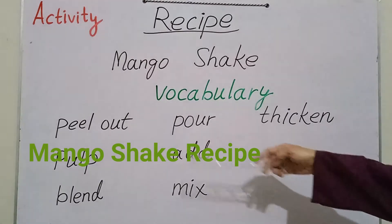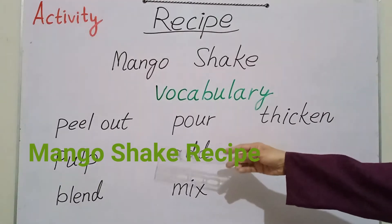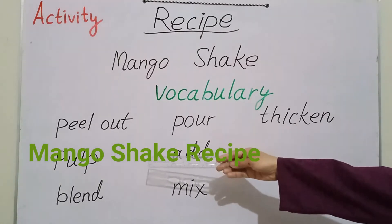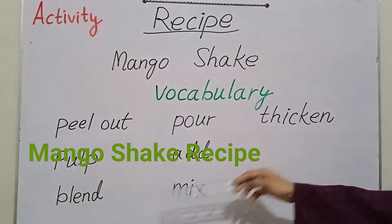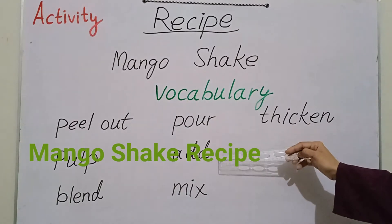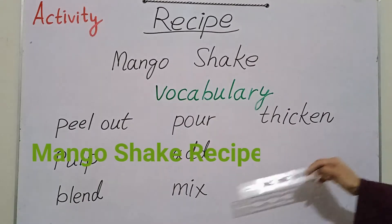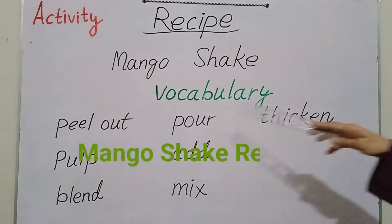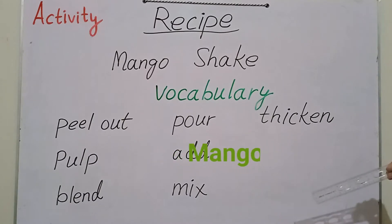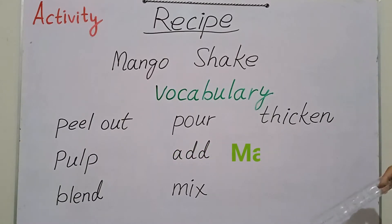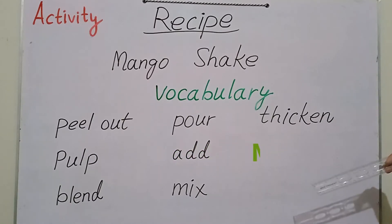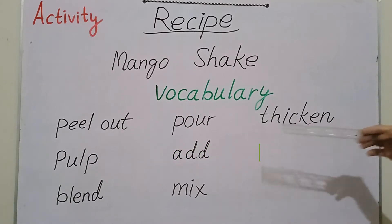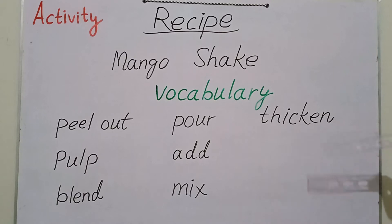First word is peel out, then pulp, blend, pour, add, mix, thicken. These are all the words we use and you will see how we use these words.